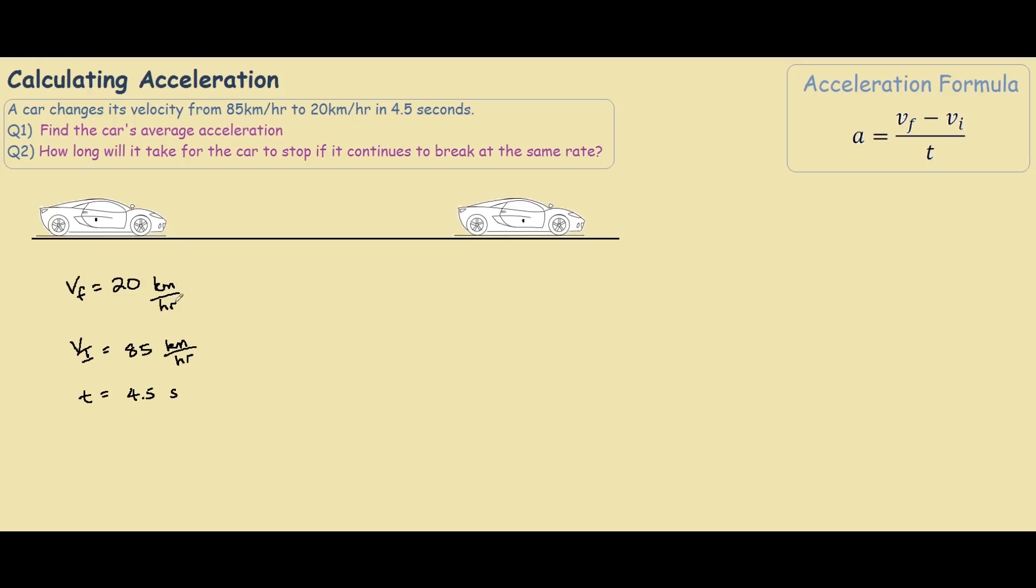So to convert km per hour to meters per second, we know that 1 km equals 1000 meters. This is the same thing, equals 1. And we know that 1 hour equals 3600 seconds. So as you can see, the hours cancels out and the kilometers cancels out, and we're left with meters per second.